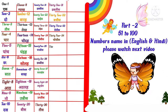T-H-I-R-T-Y F-I-V-E, 35 means thirty-five. T-H-I-R-T-Y S-I-X, 36 means thirty-six.